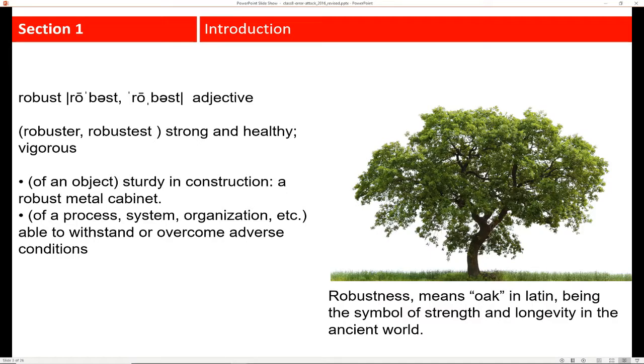Robustness means oak in Latin, which is a symbol of strength and longevity in the ancient world. You can think about how strong an oak tree is as a symbol of robustness.